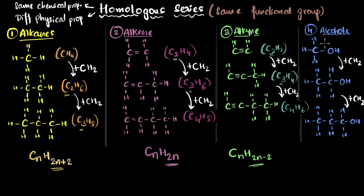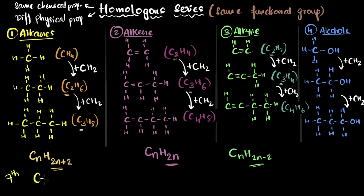As a challenge, you can try to write down the general formula for alcohols yourself, but we'll stick to these three. Let's look at some examples. If I ask you to write down the molecular formula for the seventh member of the alkane series, it's going to be CₙH₂ₙ₊₂ with n = 7, giving C₇H₁₆.